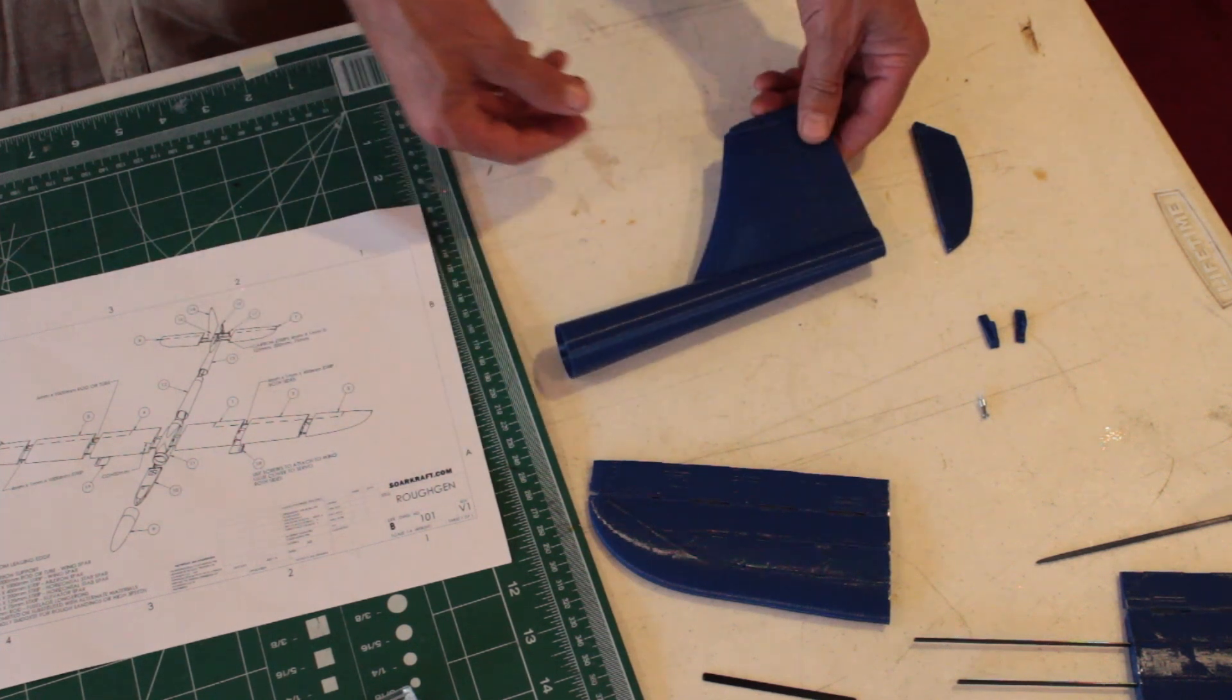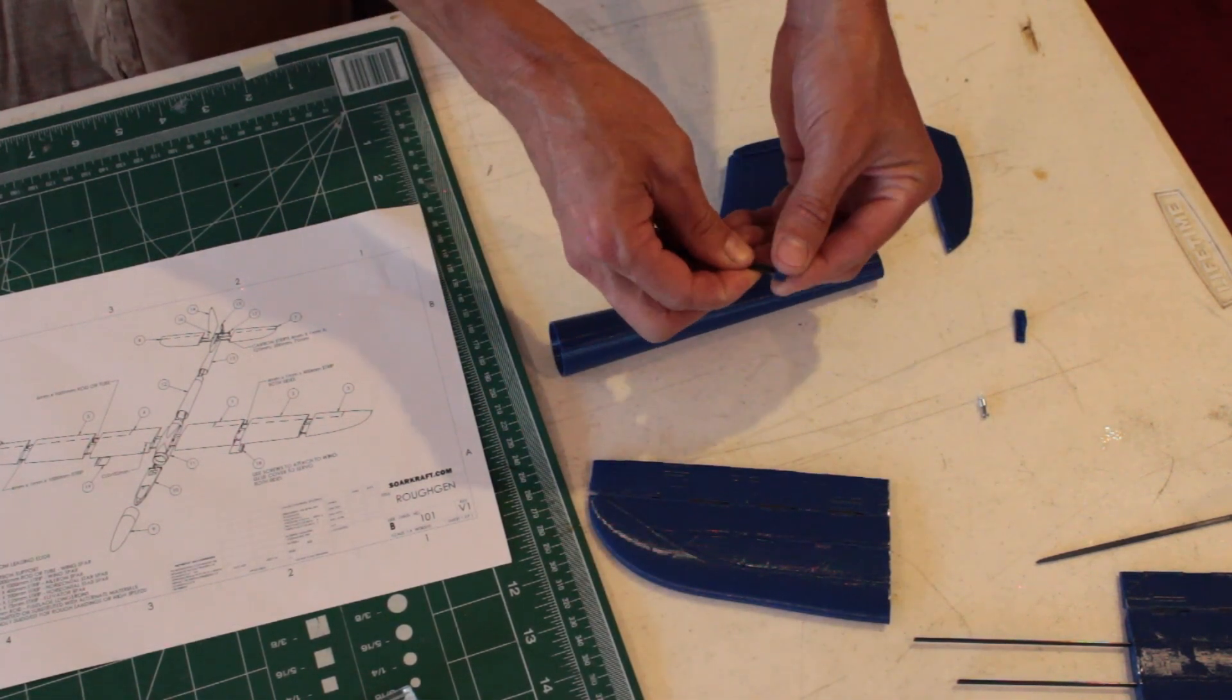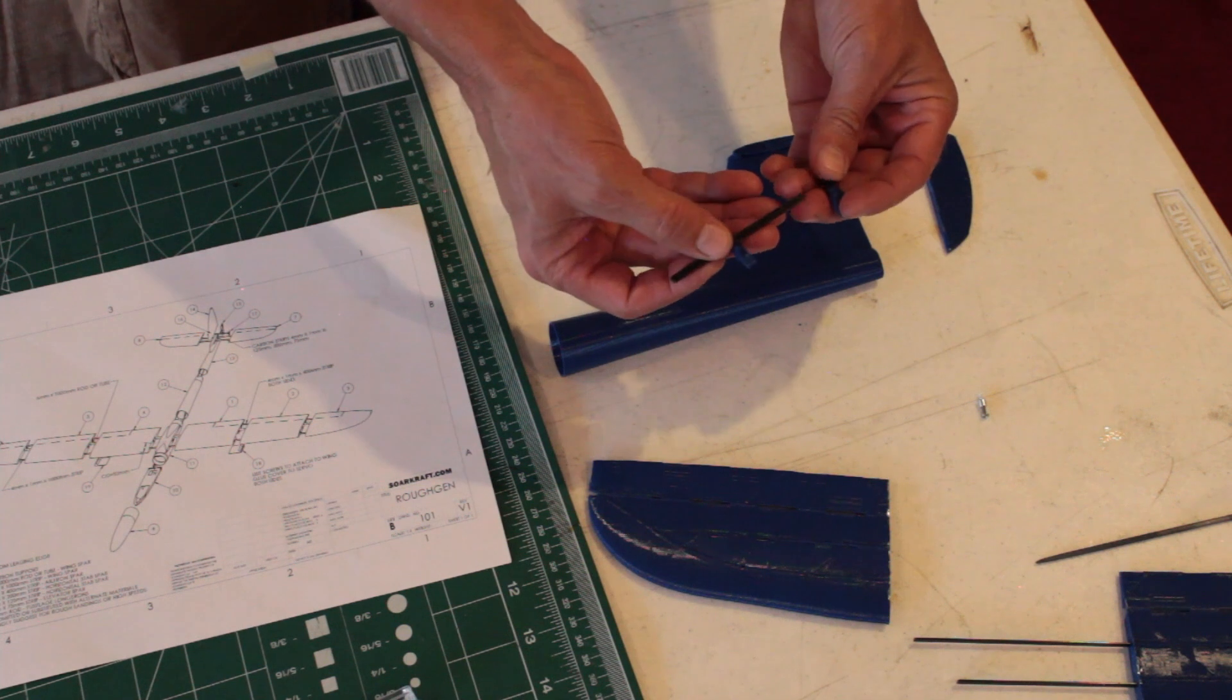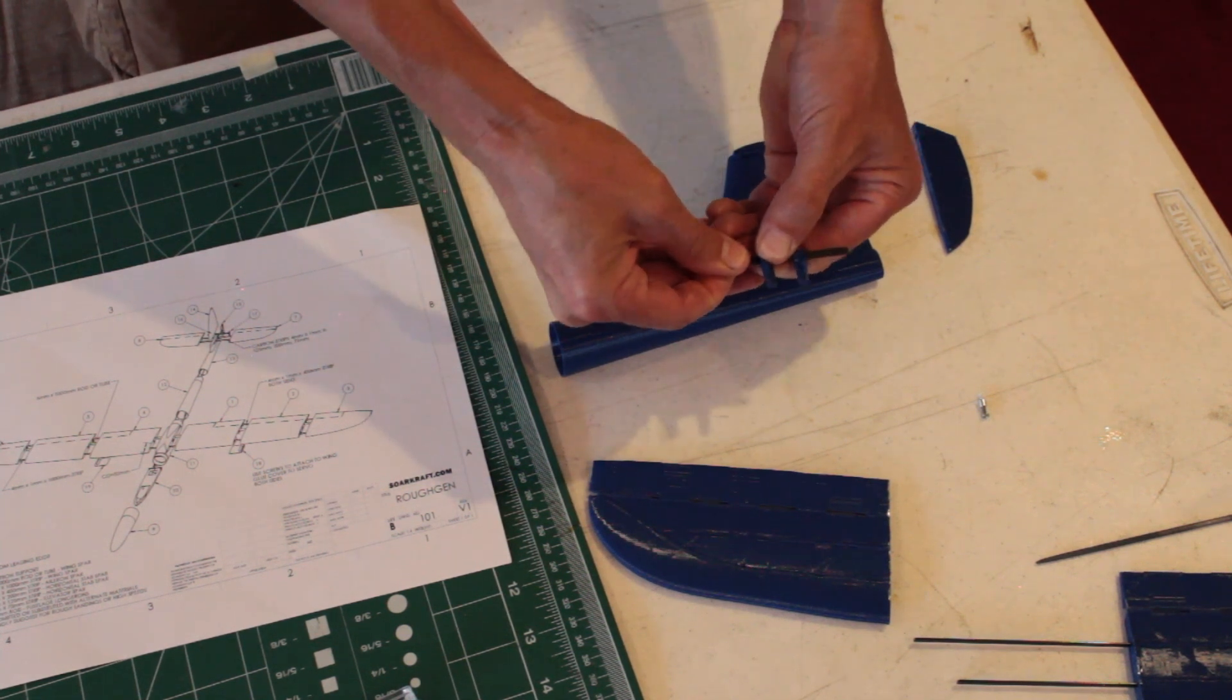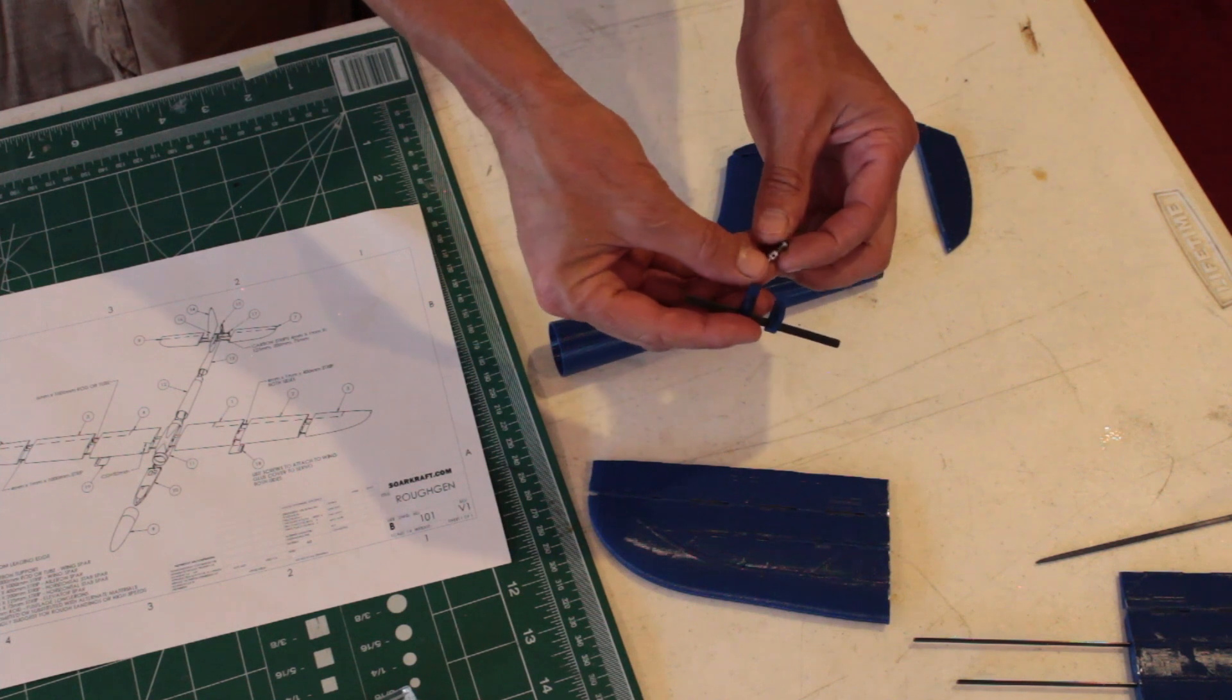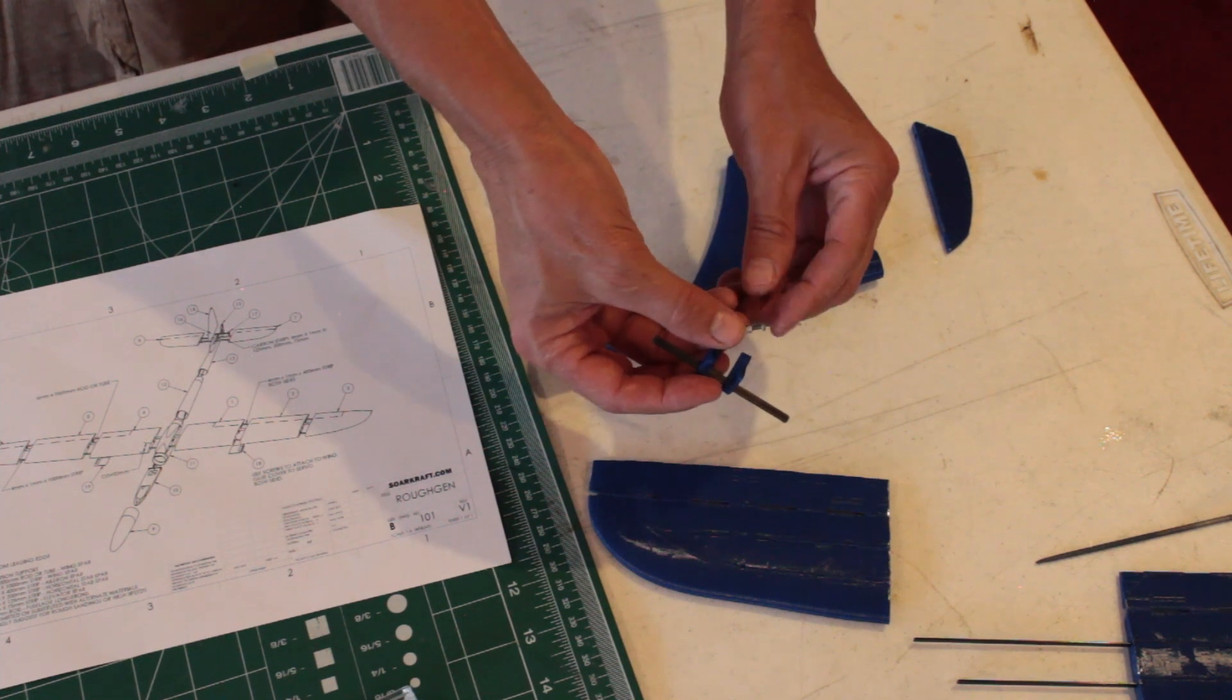The first thing to do is to put together the control horn. It does kind of matter which side - it's biased to one side, but it doesn't really matter. There's enough movement side to side that you can set it up either way.